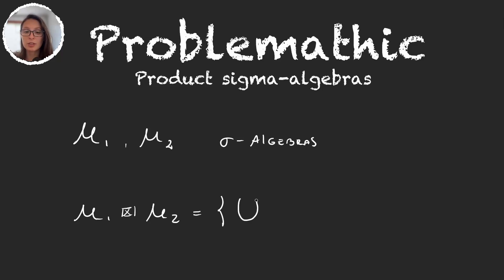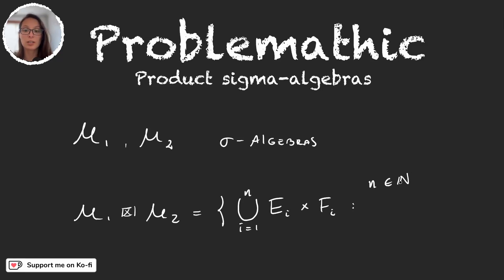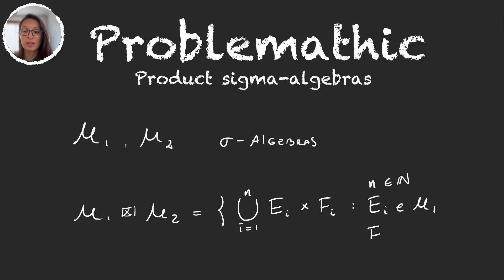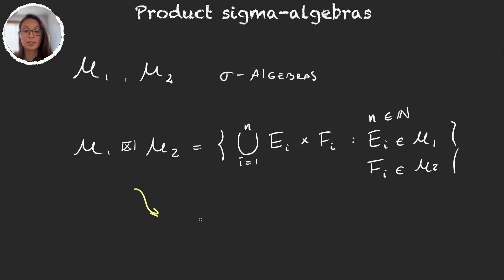That means I'm going to take unions up to n of sets, let's say ei times fi, where n is just some natural number. So I start with only one union, then two unions, three unions, and so on. Here ei is in m1 and fi is in m2. So this is just: take sets in your sigma-algebras, product them, and then union them. You take all possible such unions, and what you have is that this collection is an algebra.